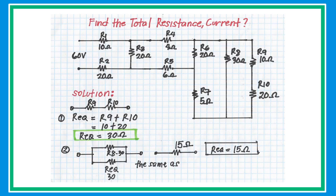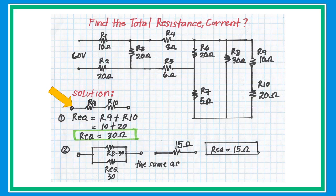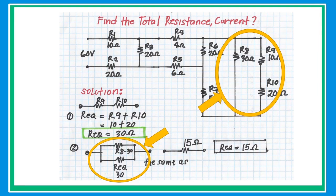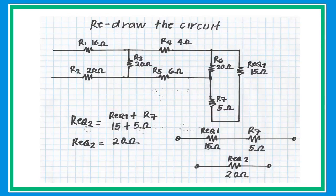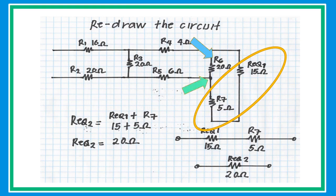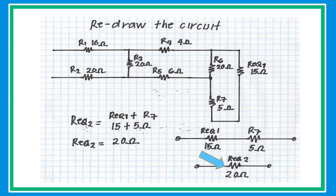This next example is harder, but by collapsing and redrawing the circuit step by step, we can solve it. Start with R9 and R10, which are connected in series — R_eq = R9 + R10, giving 30 ohms. This 30 ohm equivalent is in parallel with R8 (also 30 ohms); since they are equal, take half to get 15 ohms. Redraw and analyze again. R_eq and R7 are in series — add them to get 20 ohms. Note: you cannot yet add R6 because there is a branch at R5.